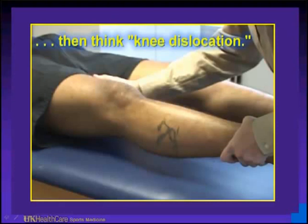Knee dislocations occur in collegiate sports. If the foot is pointing in the opposite direction from the other foot, that is a knee dislocation until proven otherwise. Watch what the athlete does with their head and face. If it's an ACL tear only, oftentimes they'll bring their knee to their chest — the heart attack of the knee. However, if they put their hands over their face and start pounding the ground, oftentimes that is a knee dislocation. The athlete generally knows something is wrong.